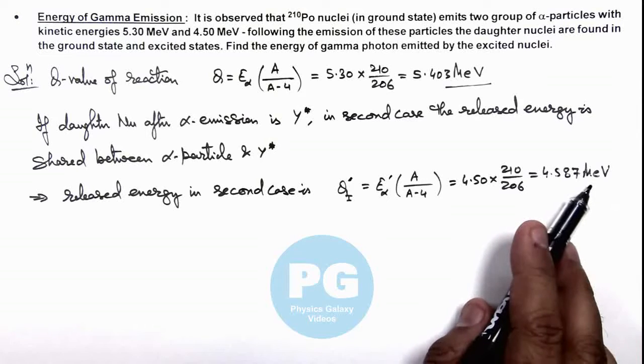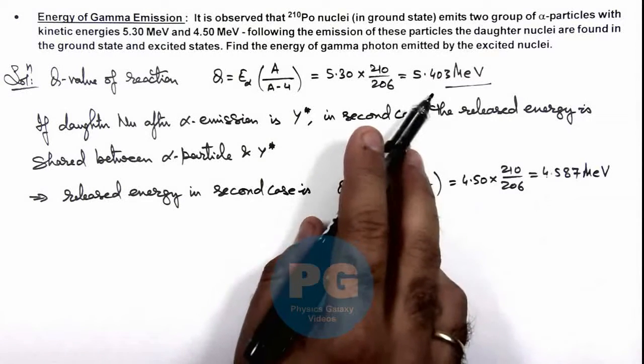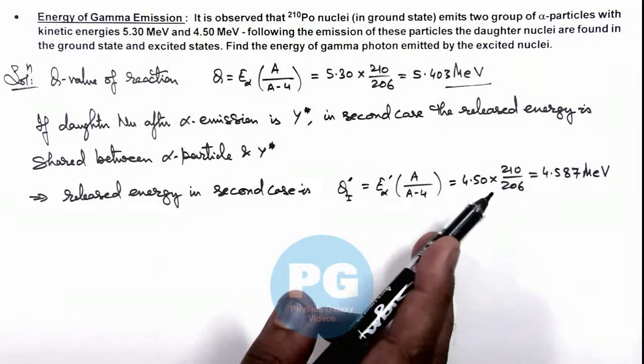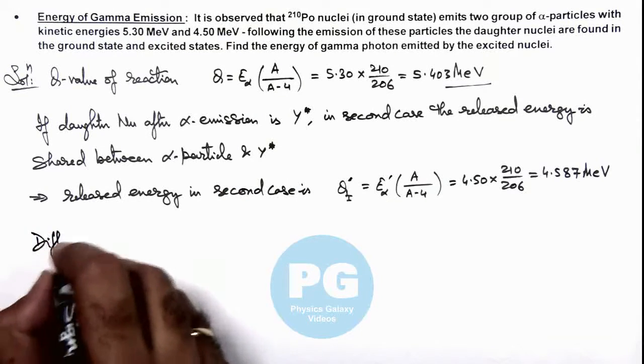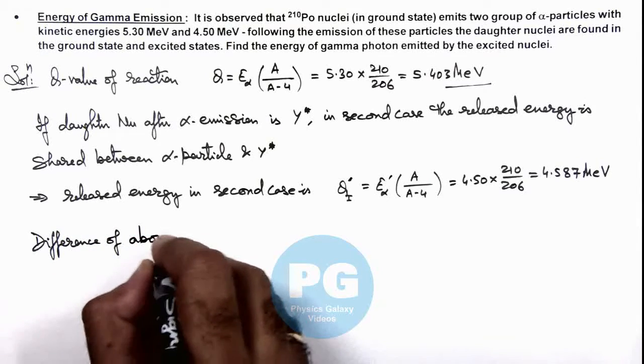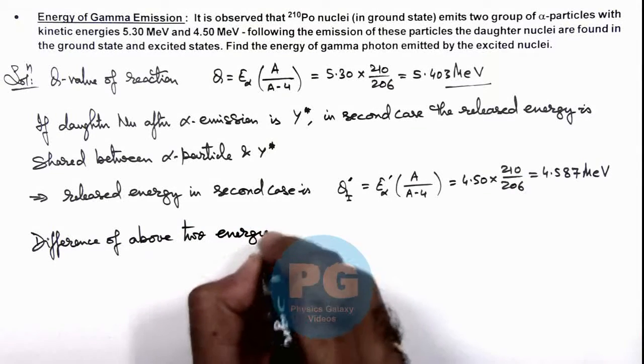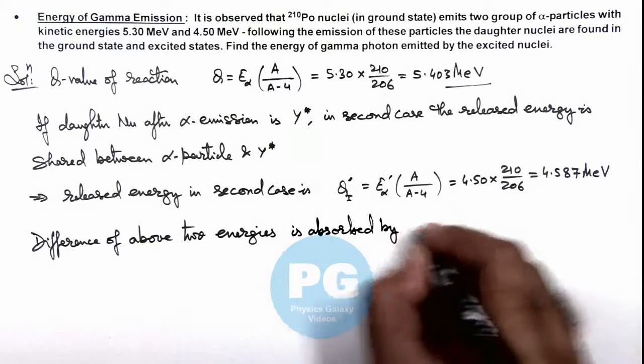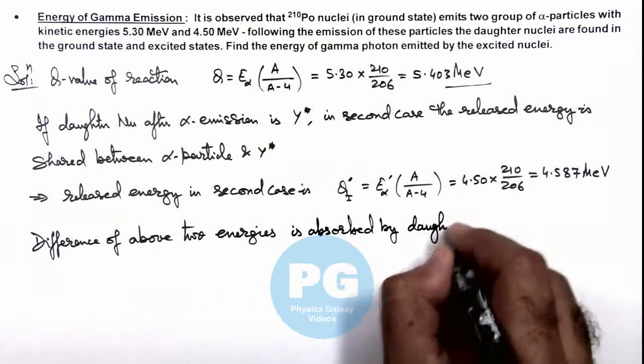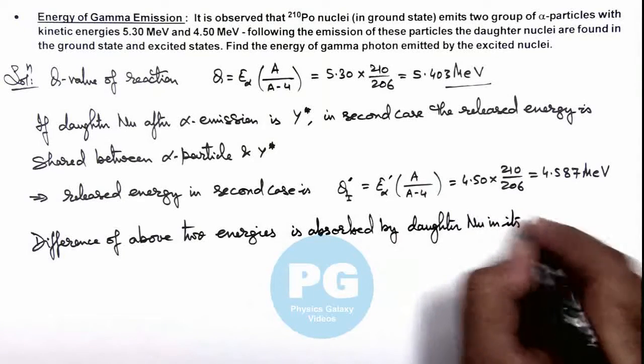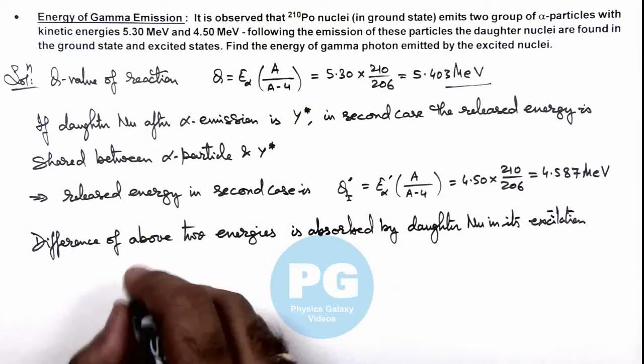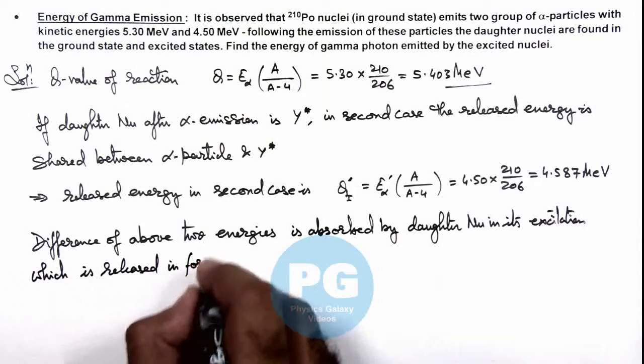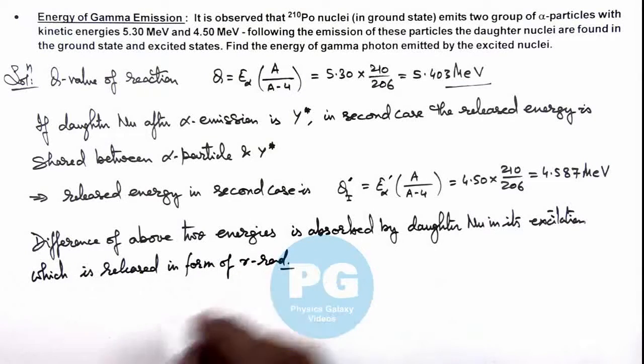This is the energy released in the second case. The difference would be absorbed by the excited daughter nucleus, which later releases it as gamma rays. The difference of the above two energies is absorbed by the daughter nucleus in its excitation and released in the form of gamma radiation.